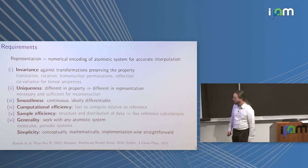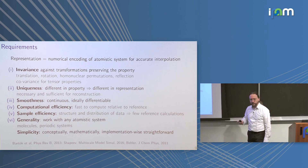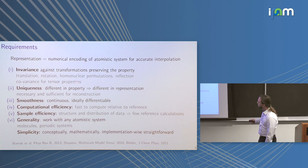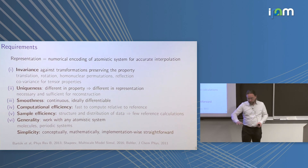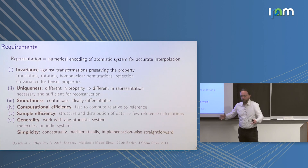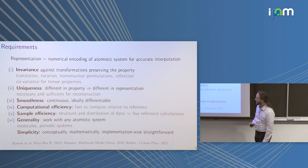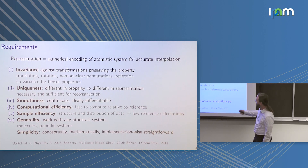The requirements for representations in this setting are: invariance against transformations that do not change the property — such as translations and rotations for scalar properties like energy — though this depends on the property. For tensorial properties like force vectors, covariance is needed instead. The counterpart is uniqueness: anything that changes the property must also change the representation, otherwise the machine cannot distinguish two different systems and will produce at least one wrong prediction. This uniqueness also allows a pre-image back-mapping from feature space to the atomistic system, up to the invariances.